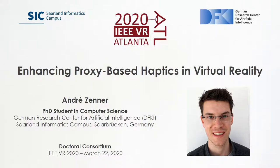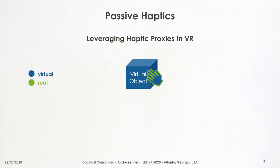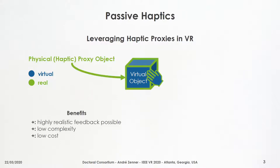In the next minutes, I'd like to introduce to you my PhD topic: Enhancing Proxy-Based Haptics in Virtual Reality. My PhD topic is about the technique of passive haptic feedback, which is the idea of leveraging so-called haptic proxies to enhance interaction in virtual reality. The idea is pretty simple: when the user tries to reach out and touch and interact with a virtual object, this virtual object is physically represented by a so-called haptic proxy object.